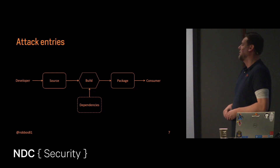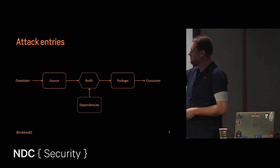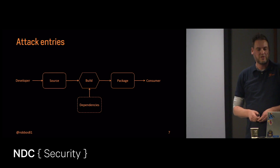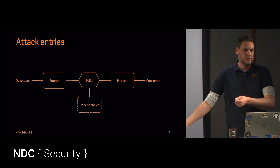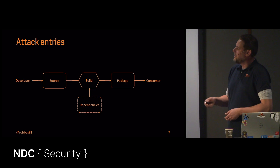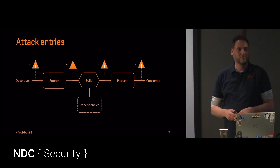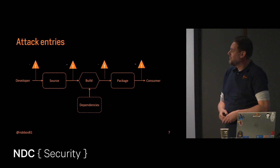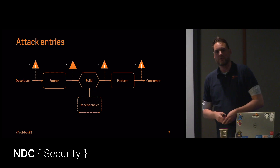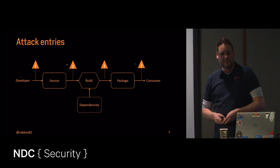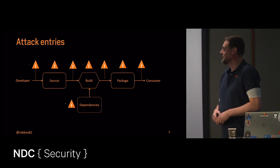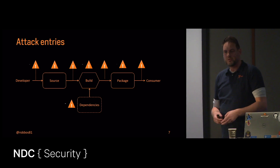The whole cycle starts with a source base where stuff is included. We have a build pipeline that spits out a package, which already pulls in dependencies. Developers do that on their own machines too. In the end, you deploy that package somewhere — a Docker container, or a library published to a package manager. There is a consumer somewhere, and all of these things are attack factors. Anywhere in the transport or build process is a possible attack vector.